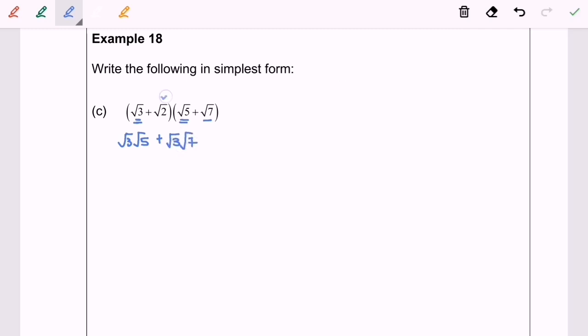Followed by square root of 2 multiplied with square root of 5. We will have positive square root of 2 multiplied with square root of 5.